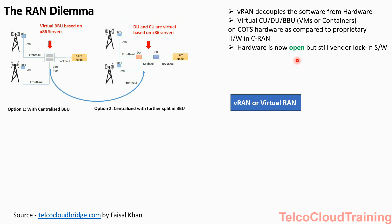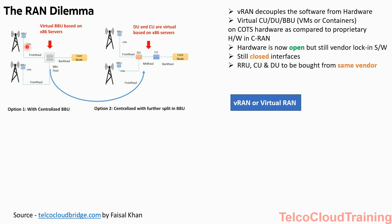In VRAN, you don't require proprietary hardware from a telco vendor — the hardware has been separated from the software. You can use normal-purpose COTS servers. Your CU, DU, and BBU are now virtual, either as VMs or containers deployed on COTS hardware. However, there is still vendor lock-in in terms of software because the interfaces — CPRI, midhall, backhaul — are still closed. The only saving achieved is some CAPEX on the BBU hardware, since COTS servers are cheaper than proprietary hardware.